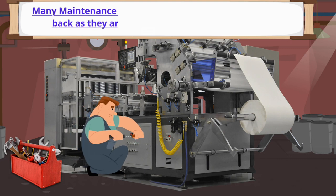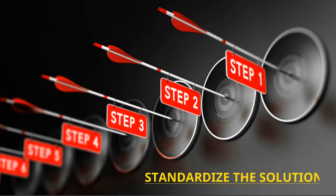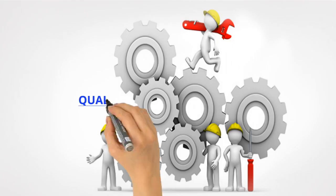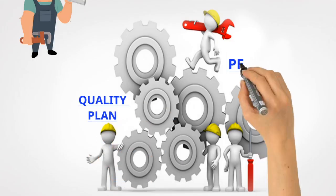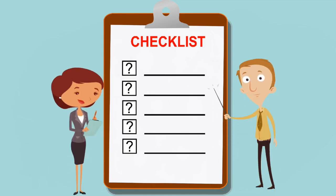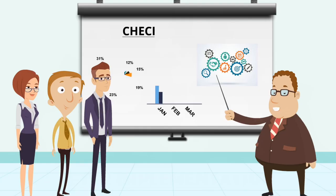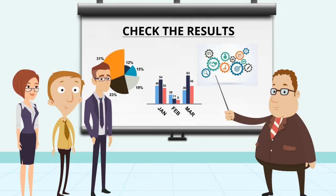The next step is D7 — prevent recurrence. This is another very important step. Many problems in a company keep coming back because they are not able to prevent recurrence. The solution has to be standardized properly — modify the quality plan, PFMEA, and other systems as required. The solution implemented is checked periodically using checklists, and senior people participate in verifying whether the solutions are working.